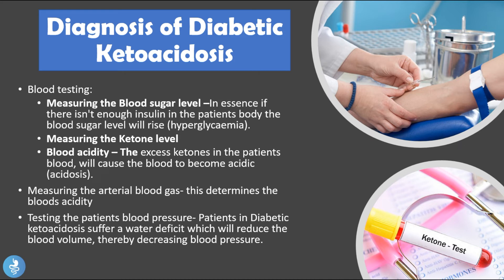Other diagnostic tools include measuring arterial blood gas levels, which also determines blood acidity, and testing the patient's blood pressure. Patients in diabetic ketoacidosis suffer a water deficit which reduces blood volume, thereby decreasing blood pressure, so these patients will present with hypotension.